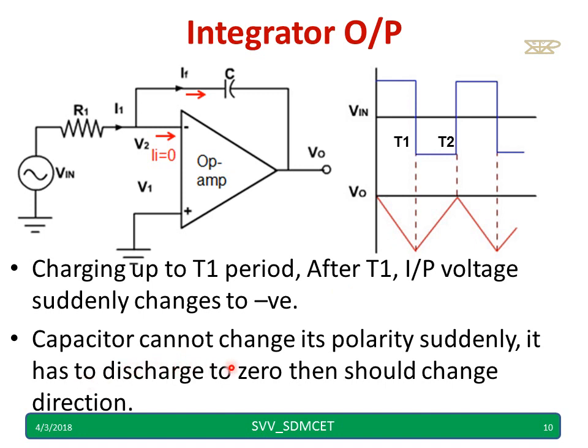It has to discharge to 0. Then it should change the direction of charging. Hence it will discharge towards 0. Again slope of this depends upon RC. This slope and this slope will remain same. Hence RC time constant is same in both the cases. This is positive and negative and voltage will start reducing up to 0.